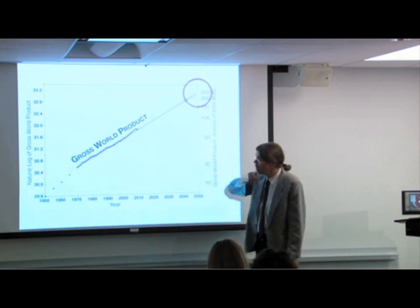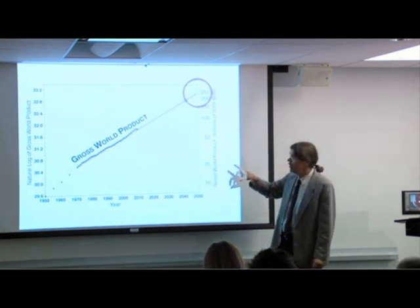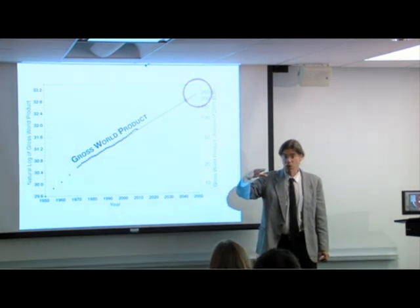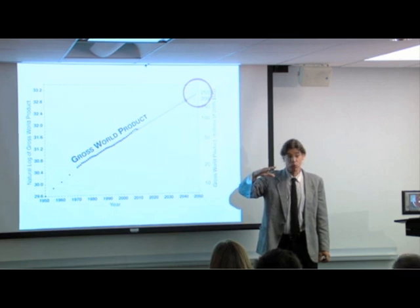And this is plotted on a natural log graph. I do that because if it's exponential, it's a straight line on a log graph, and the slope of the straight line gives you the exponential growth rate.